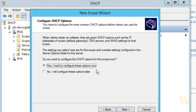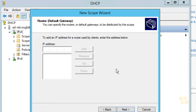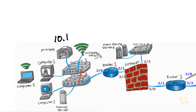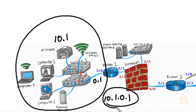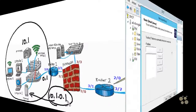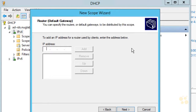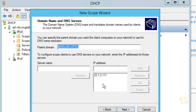Next it's asking if we want to configure DHCP options to hand out along with IP addresses, like DNS servers and default gateways. Let's click Next. It's asking for the default gateway these clients should use. Looking at our topology, for the 10.1 network we want all devices to use Router 1, which is at 10.1.0.1. Back in the Windows 2012 DHCP Server Manager, we'll enter 10.1.0.1 as the default gateway and click Add, then Next.